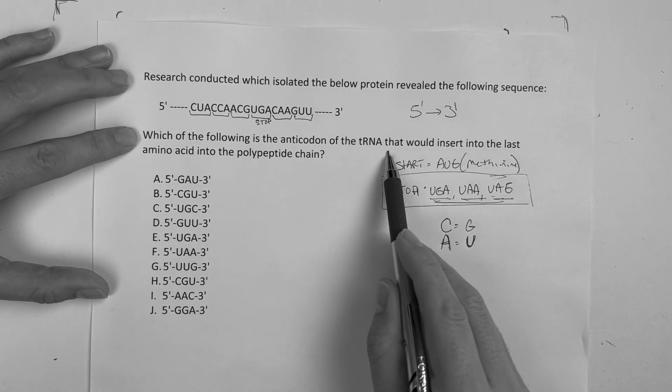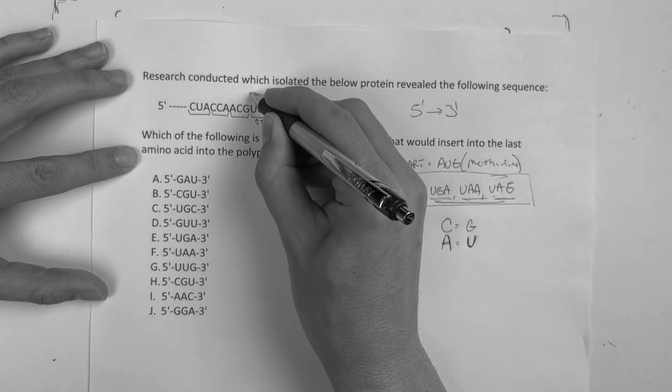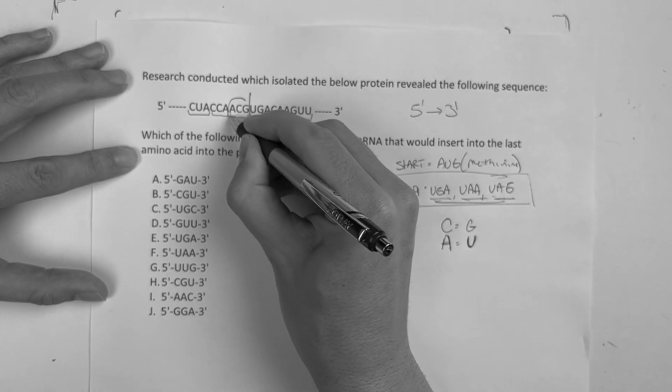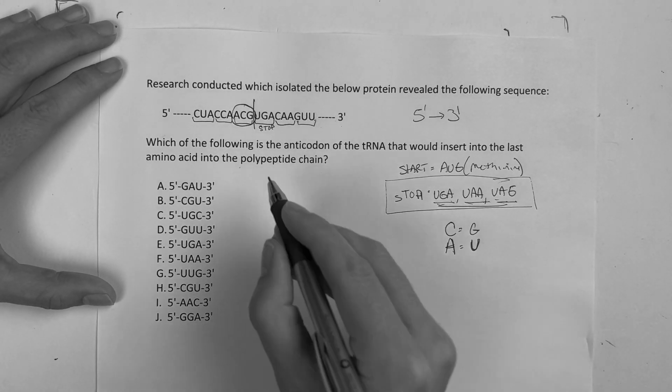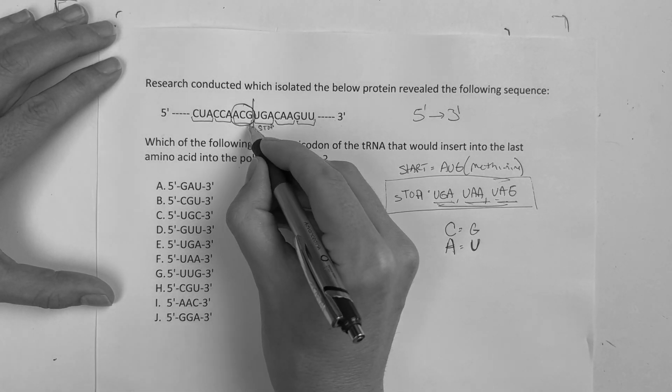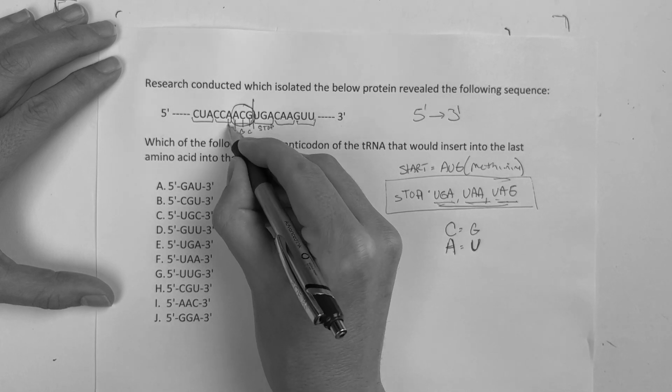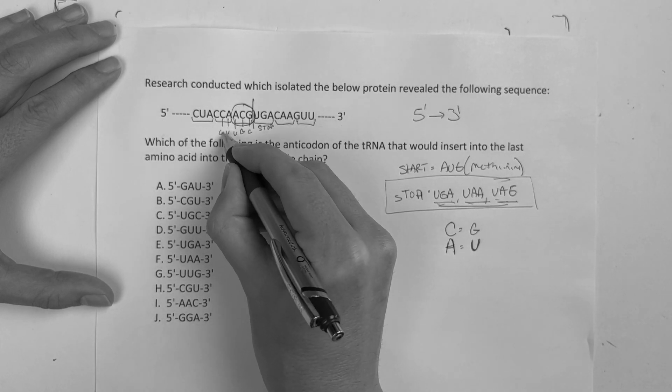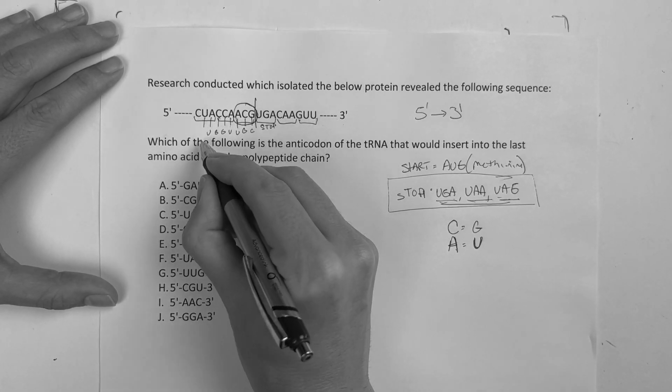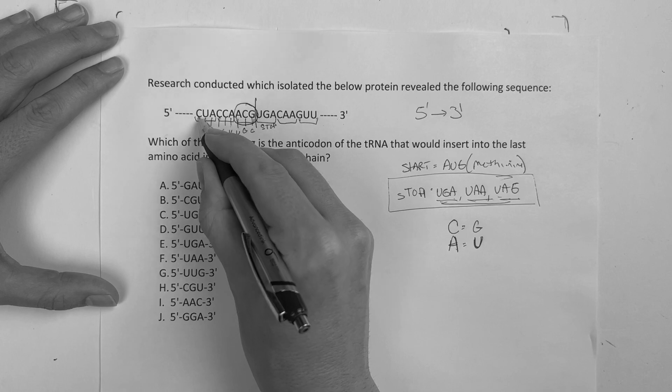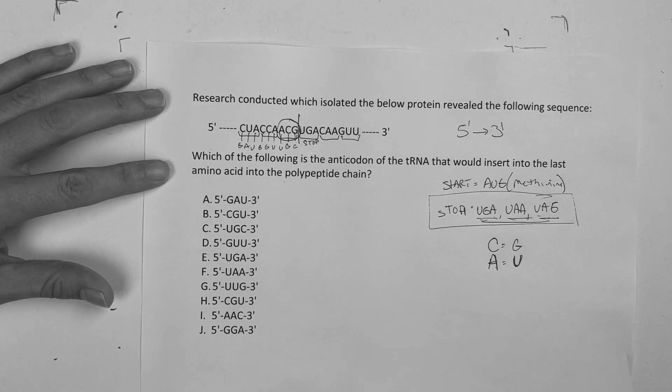So which of the following anticodons that would insert into the last amino acid? Well, if this is a stop codon, then the last amino acid is going to be this guy. So now we're going to play the matching game, right? We're going to say, okay, G, you go with C, C, you go with G, A with U, C with G, A with U, and then U, A, and C, G. So now do you have enough information to solve this?